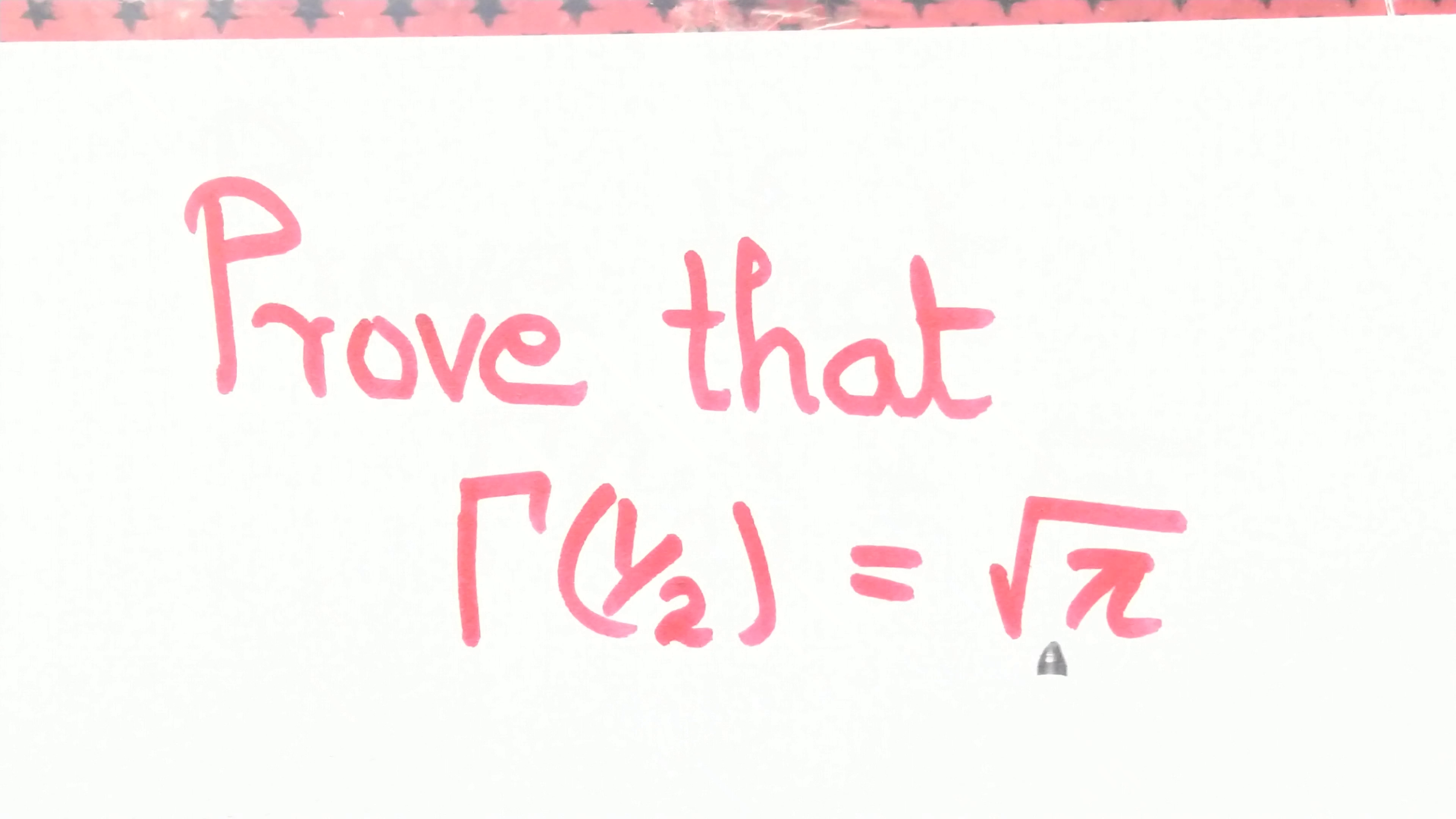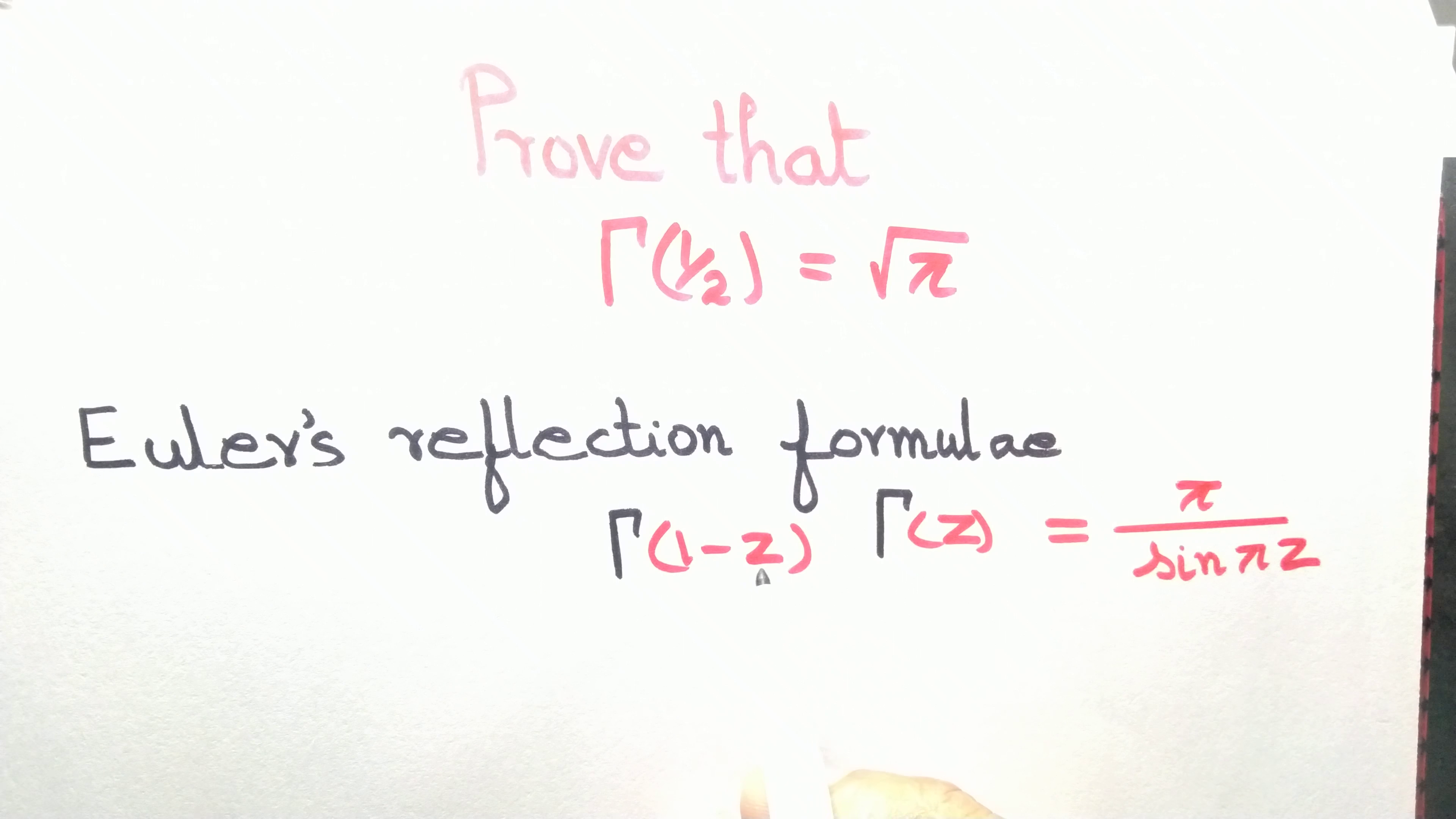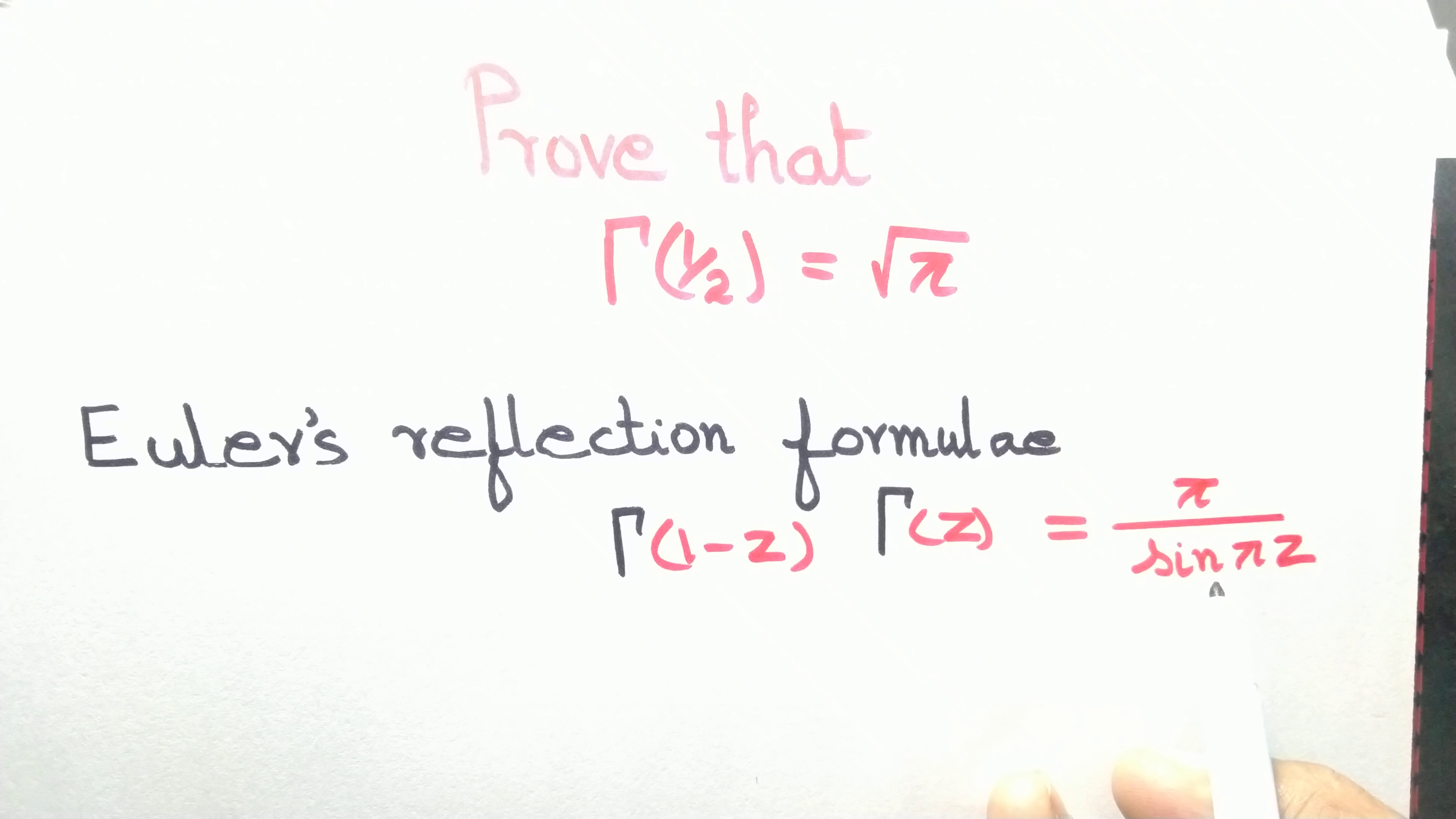Let's prove that gamma of one-half equals root pi. We start by Euler's reflection formula: gamma of 1 minus z times gamma of z equals pi divided by sine of pi z.